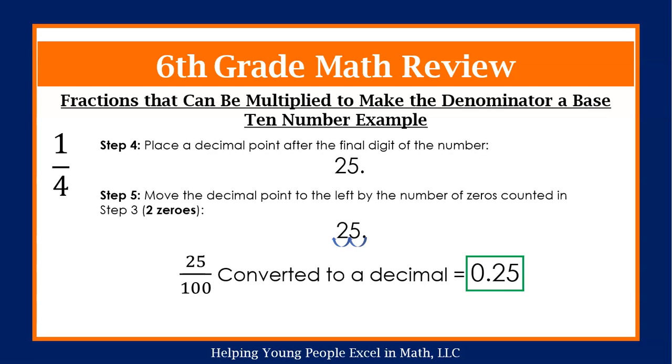For step four, we are going to place our decimal point at the final digit of the number, which is 5. Remember, that decimal place is already there. With whole numbers, we usually don't write it. But because we are converting to a decimal, we are going to show where the decimal point is.